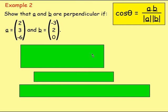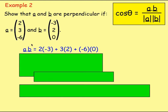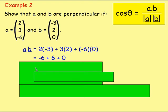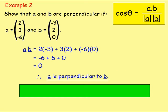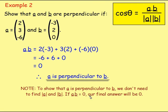Example 2: show that a and b are perpendicular if a equals (2, 3, −6) and b equals (−3, 2, 0). Remember, if the vectors are perpendicular, then a·b must equal 0. So let's find a·b: that's 2×(−3) plus 3×2 plus (−6)×0, which gives −6 + 6 + 0 = 0. That is what we wanted, so a is perpendicular to b. To show perpendicularity, you don't need the magnitudes — you just need to show a·b equals zero.